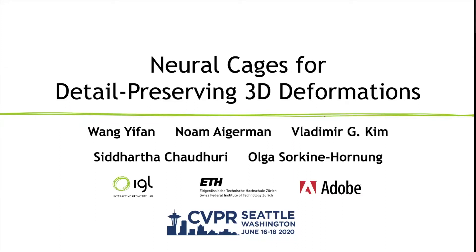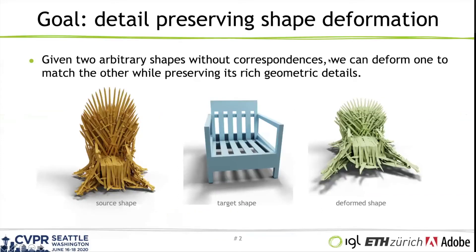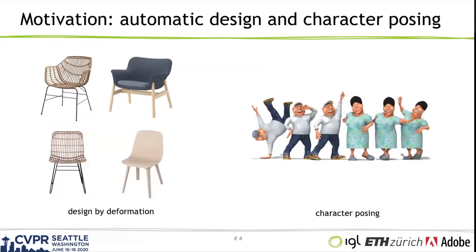Hi, my name is Yifan. In the next five minutes, I'll be showing you a new method for 3D shape deformation. The primary motivation of this work is detail preservation. More specifically, given two arbitrary shapes without correspondences, we want to transform one to match the other while preserving all its rich geometric details, such as all the sword embellishments shown on iron drill. This technique can be used in many areas, such as for design and animation.